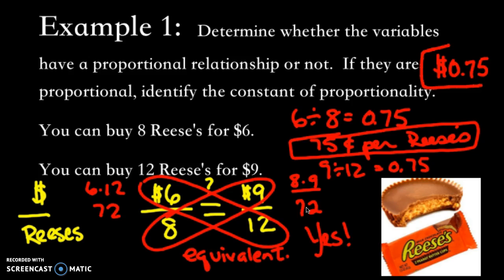And now again, like we've talked about before, the order of division matters. So you could do 8 divided by 6, but then you just need to identify what that means, Reese's per dollar. And that's not quite as traditional. Okay, let's look at one more.